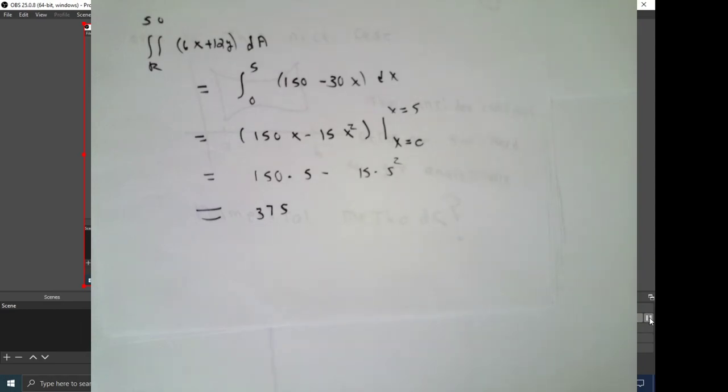To finish the problem, since we have found the inside integral, all we have to do is to find the integral from 0 to 5 with respect to x of 150 minus 30 times x, which is straightforward and turns out to be 375.